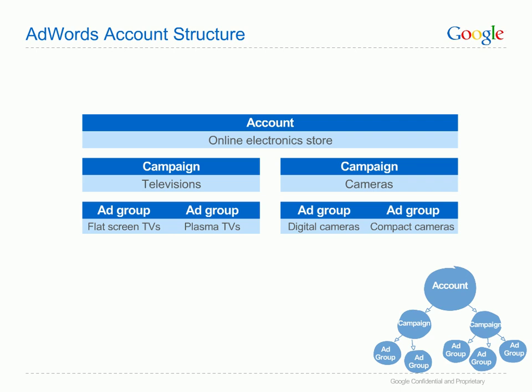For example, if you're an electronics retailer, you may want to organise your account by product category. The ads in each ad group are shown when a user searches for the keywords in that ad group. Making each ad group tightly themed means that when a user searches for your keywords, they will see an ad that is very relevant to their search and are therefore more likely to click on the ad and visit your site. As a rule of thumb, try to keep your ad groups as tightly themed as possible — so when someone searches for a flat screen TV, they see your ad specifically related to flat screen TVs.